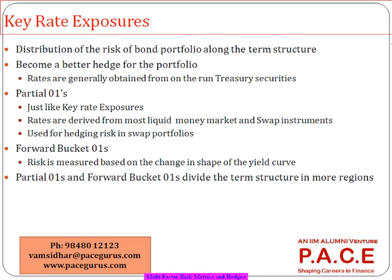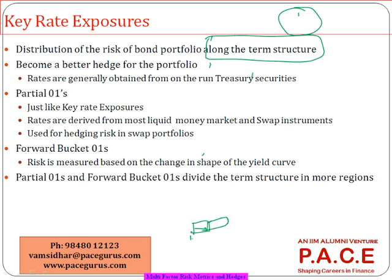That is where we use mechanisms like the key rate-based approach and the bucket-based approach. When talking about key rate exposure, along the term structure we find out the risks not as a single combined measure for all maturities — which is what duration was doing. Instead, we identify the risk along the term structure: for a two-year maturity, what is the duration; for a five-year maturity, what is the duration; for a ten-year maturity, what is the duration — and then we combine all of them to find the overall duration or convexity of the portfolio.